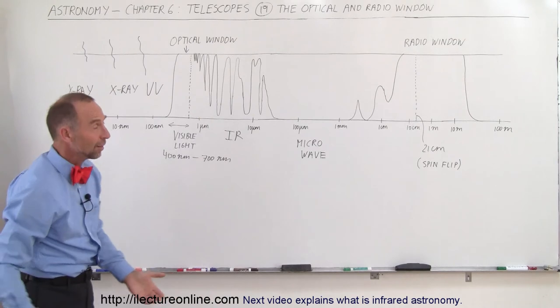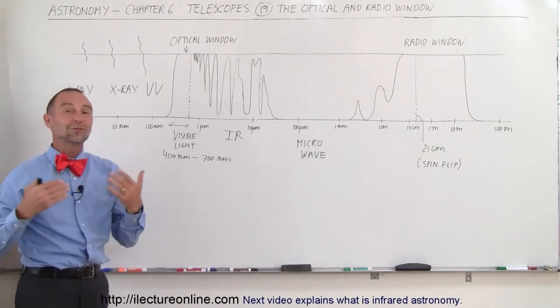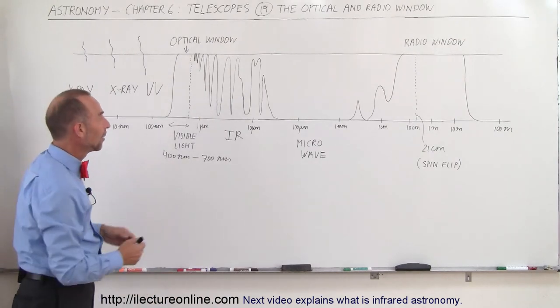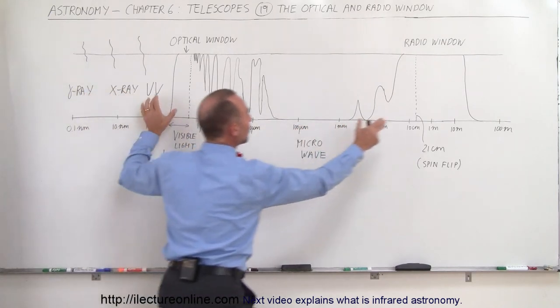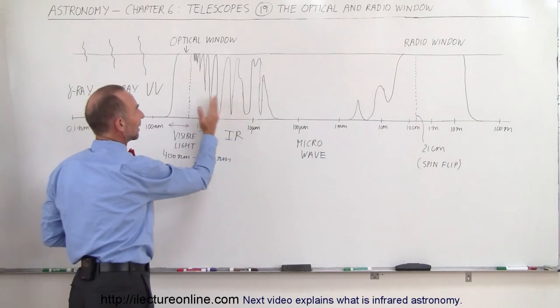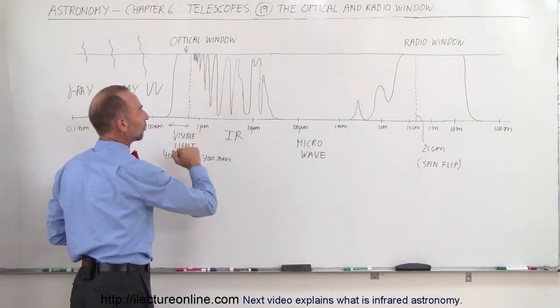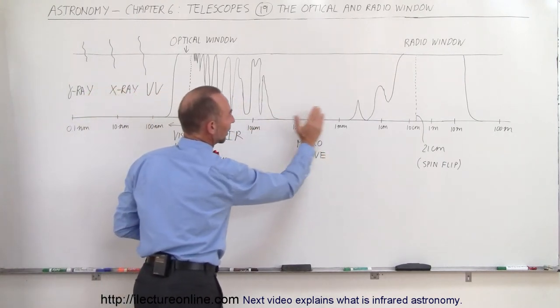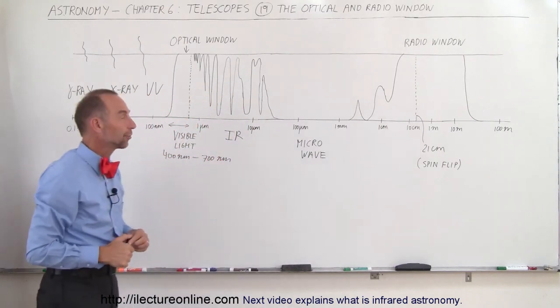So in astronomy, we'd like to observe things in every wavelength. Predominantly, visible and radio are the two wavelengths that we can see from Earth. Infrared is kind of hit and miss depending upon what wavelength you're observing. Microwave, there's not a lot of open windows we can see anything through.